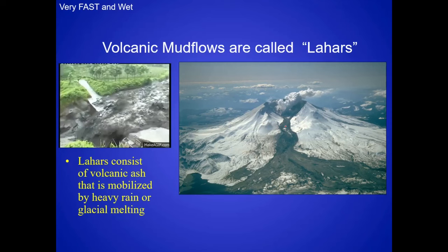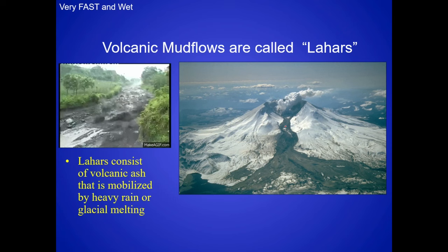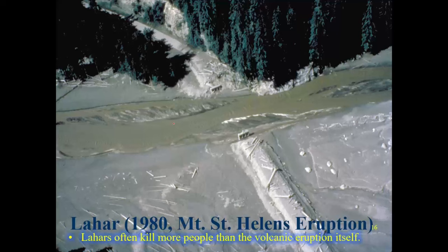Another type is called lahars. Lahars are a little bit different than debris flows — they are volcanic mud flows made up of volcanic mud. These are actually extremely dangerous. They actually killed more people in the Mount St. Helens eruption than the eruption itself.